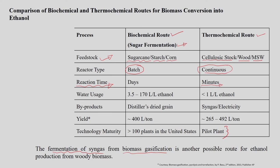The fermentation route requires significant amounts of water, whereas the thermochemical conversion route requires significantly less. The byproduct of regular alcoholic fermentation is distillers dried grain, while in the thermochemical route syngas and electricity are the byproducts. The yield achieved in alcoholic fermentation is relatively high, and the biochemical route has greater technological maturity, providing an important platform for expansion.